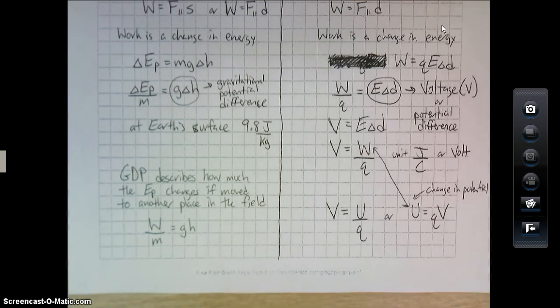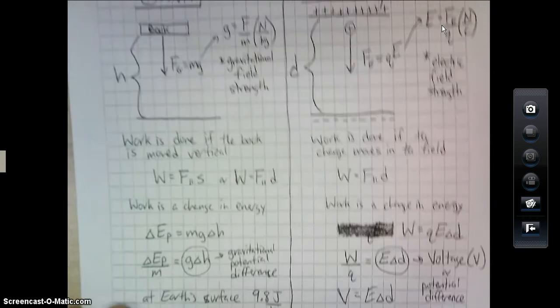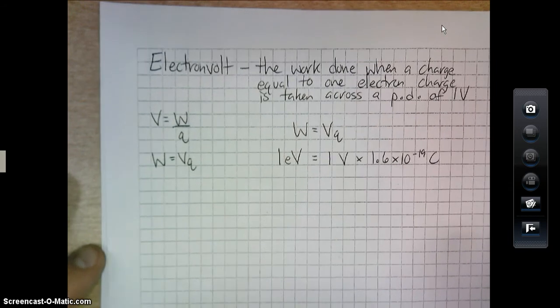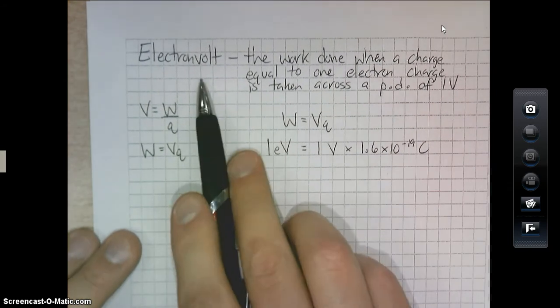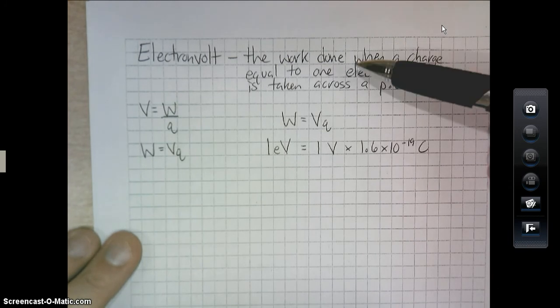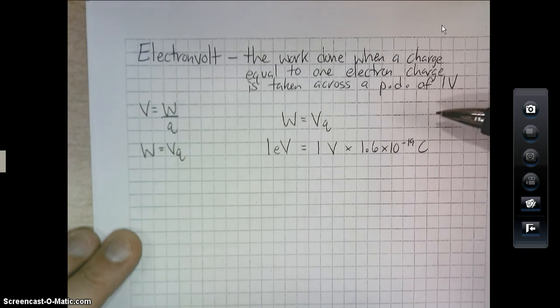All right. Now, these charges and things that we talk about or this change in potential can be very small numbers. Charges and things like that carry a very small value. So, one way that we can make it a little more, or use some numbers that are a little larger values, is we have something called an electron volt.